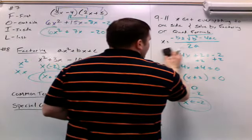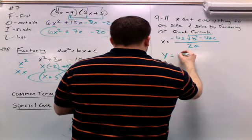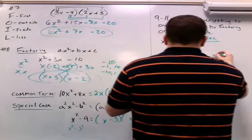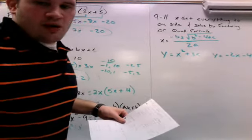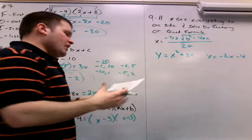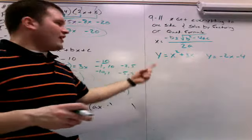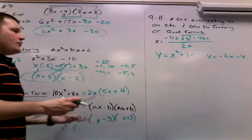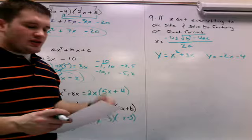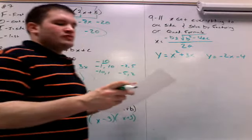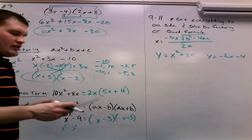Another type of problem you might get in problems 9 through 11 is where they give you two equations — for example, y equals x squared plus 3x, and y equals negative 2x minus 4. You should start by graphing to confirm whether solutions exist. This one is special because they don't just want you to find x — they also want the corresponding y value for each x. If you graph it, you'll see a parabola intersecting a line at two points: one where both x and y are negative, and another where x is negative but y is not.